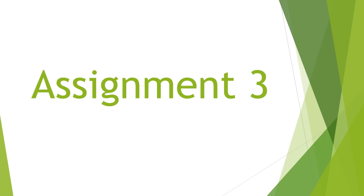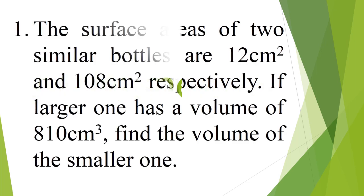Assignment. Question number 1: the surface areas of two similar bottles are 12 cm squared and 108 cm squared respectively. If the larger one has a volume of 810 cm cubed, find the volume of the smaller one.